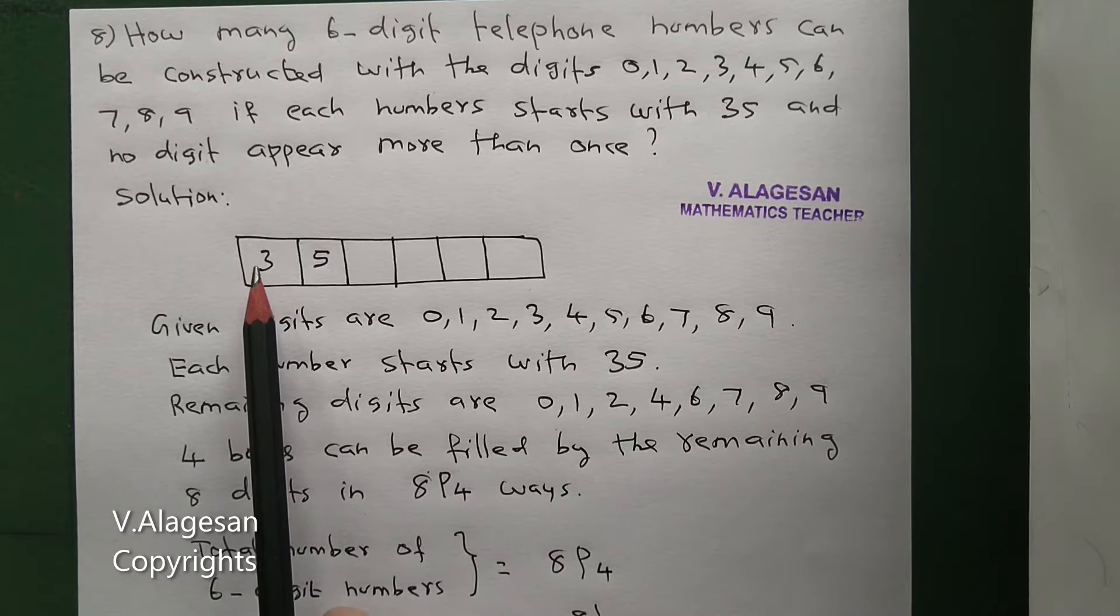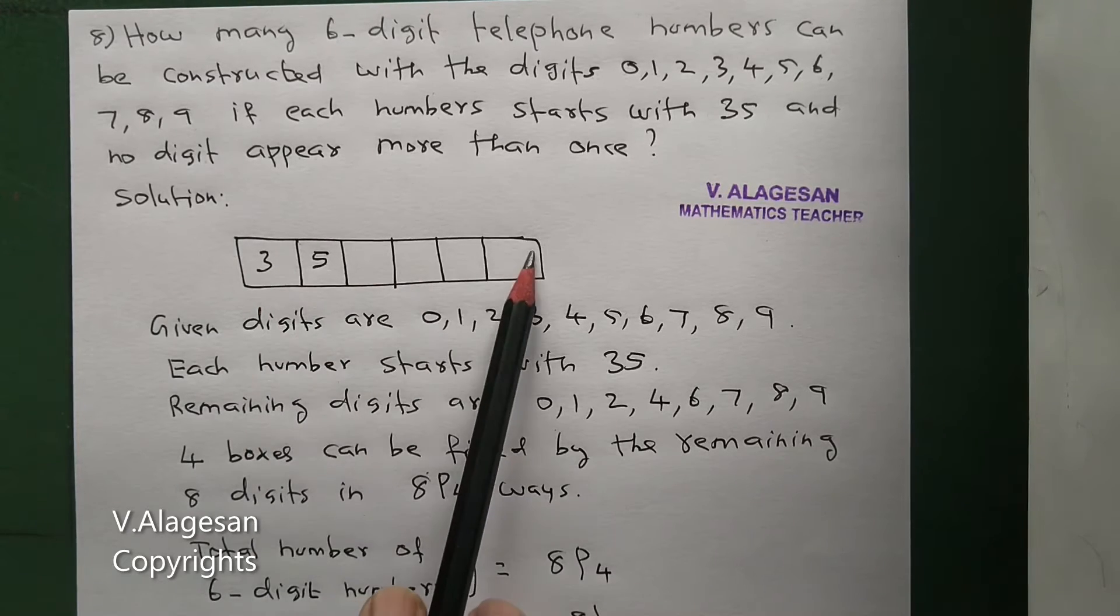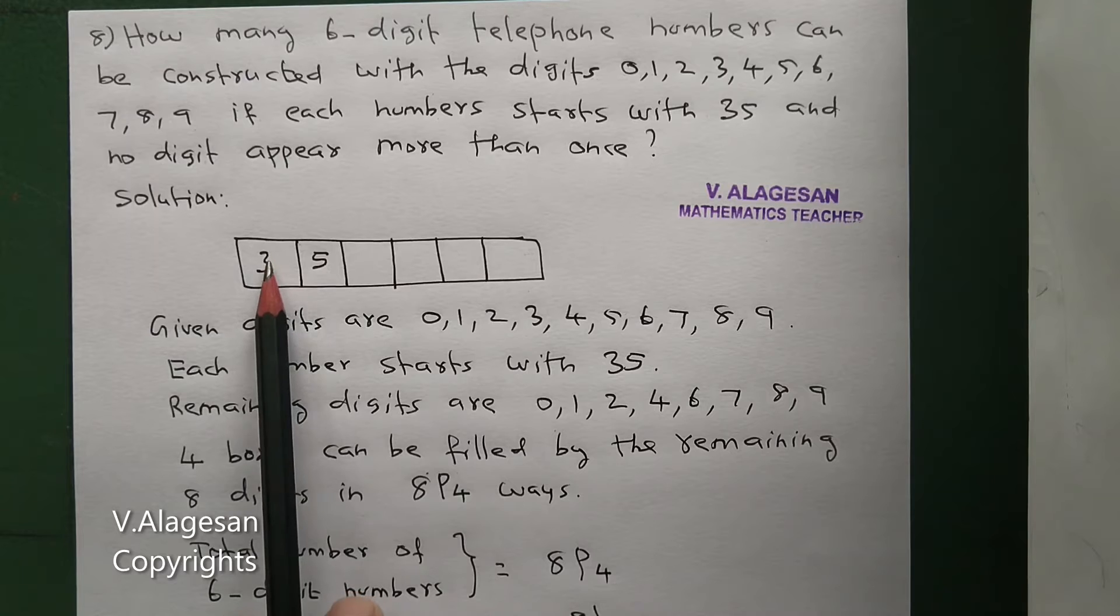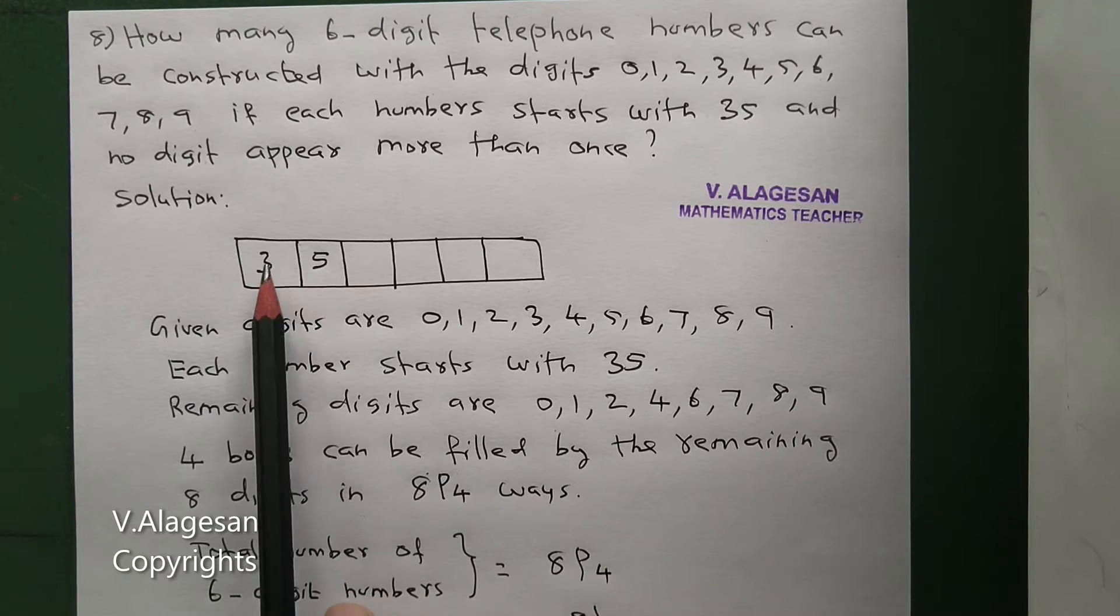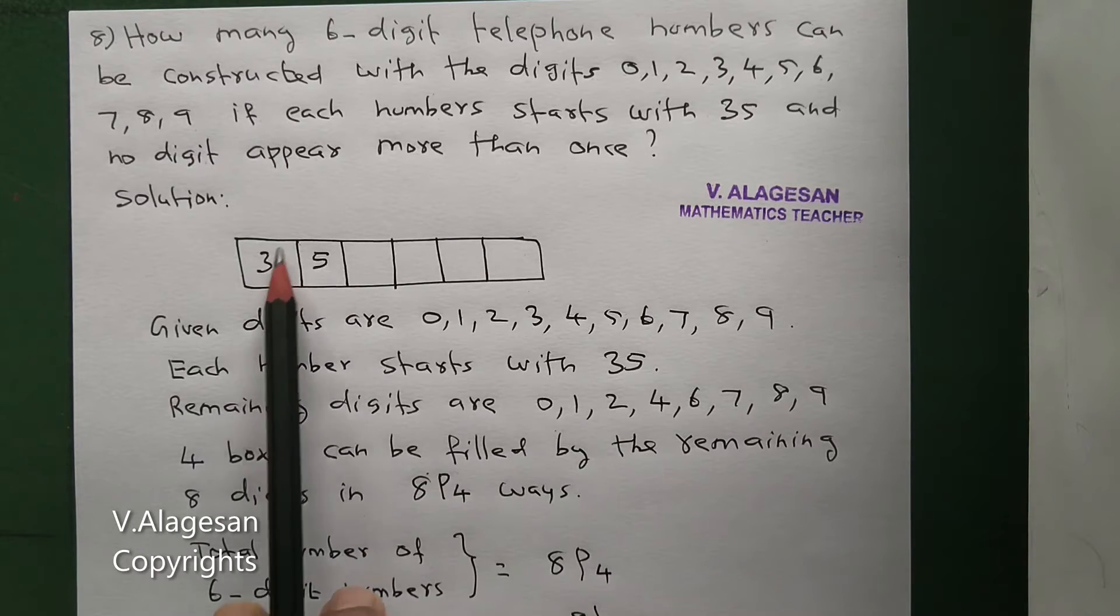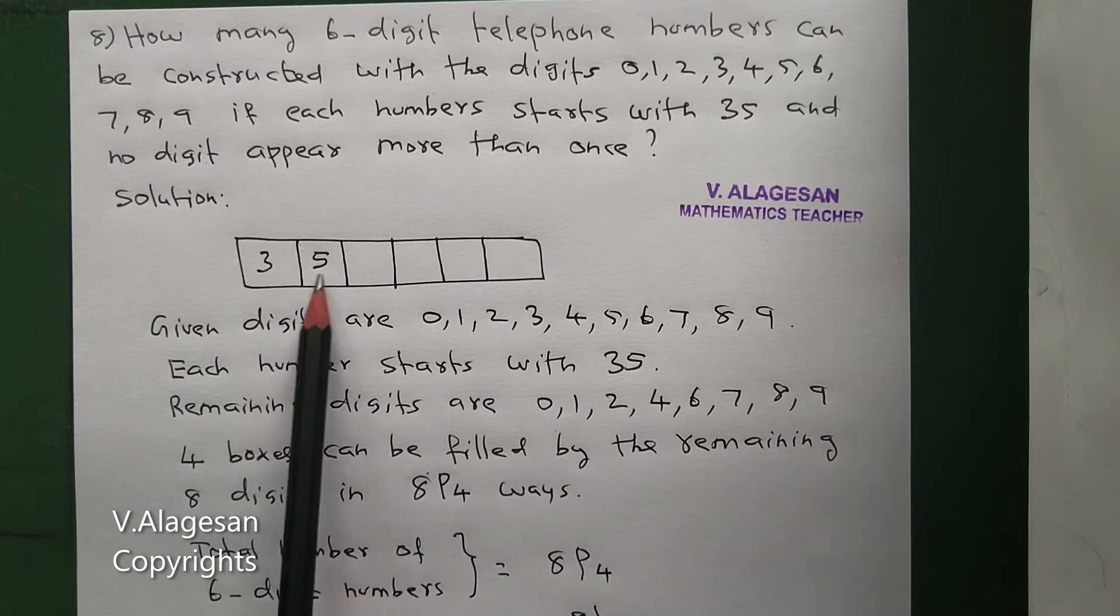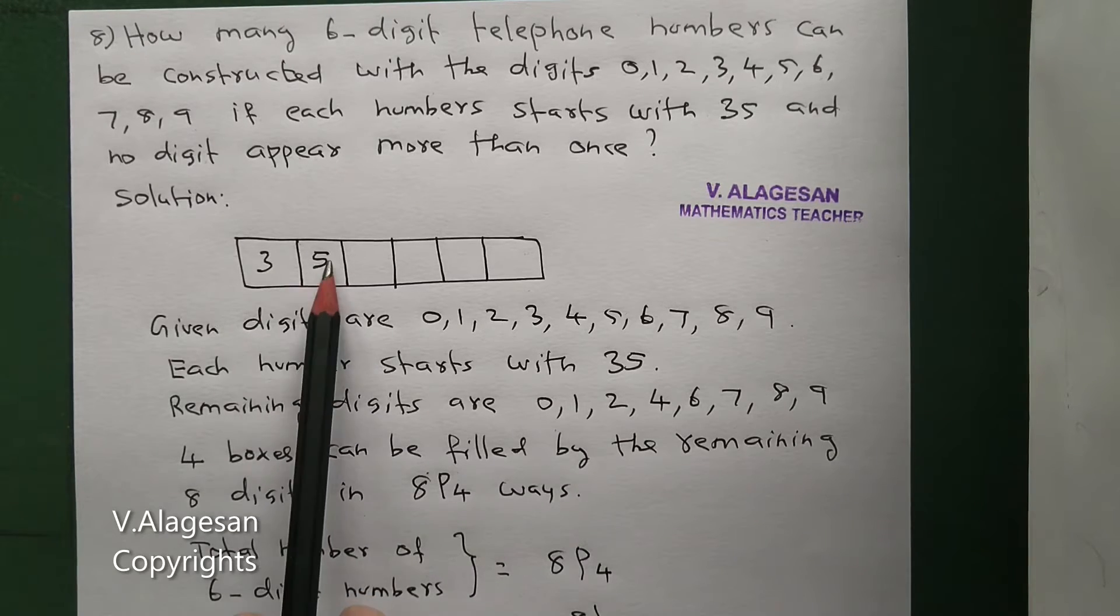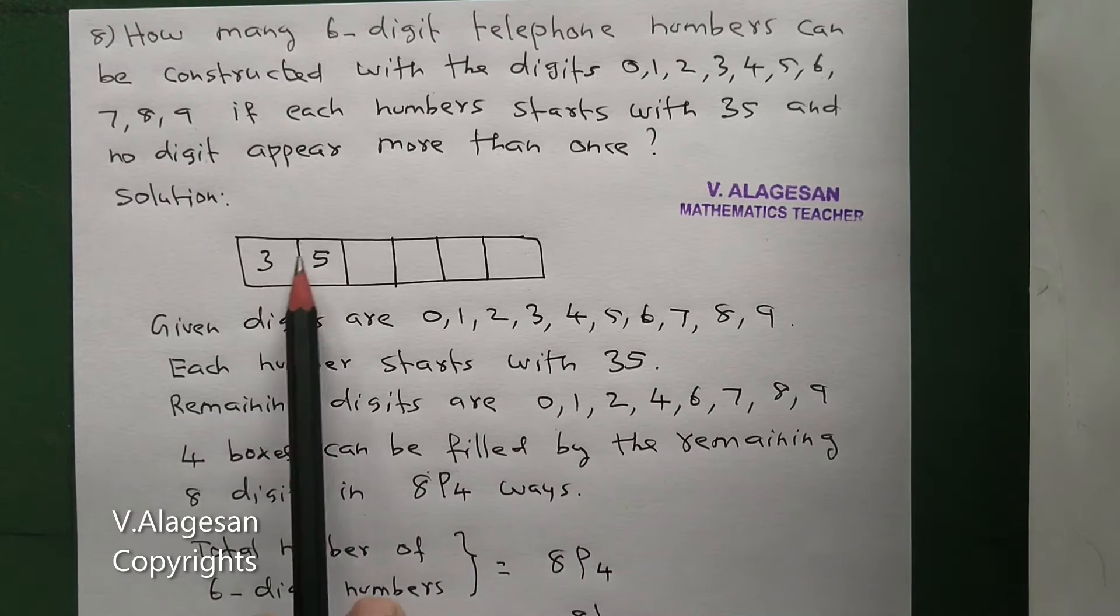Now, 6-digit telephone numbers, 6 boxes. I'll let the first, second, the two boxes are 3, 5. All numbers are starting with 35. Okay? So, 35.